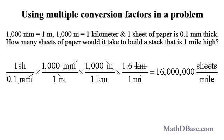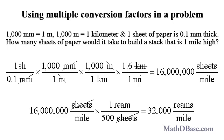We will multiply the conversion factor one sheet per 1/10th of a millimeter by 1,000 millimeters per meter by 1,000 meters per kilometer by 1.6 kilometers per mile. All of the units will cancel except sheets per mile, giving us 16 million sheets per mile. Since there are 500 sheets in a ream of paper, there would be 32,000 reams in a stack one mile high.